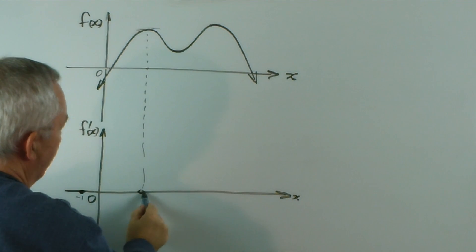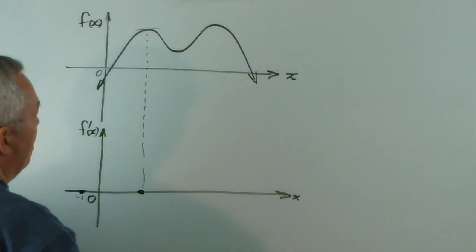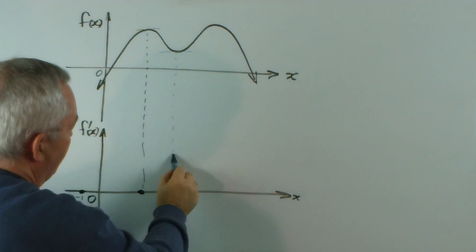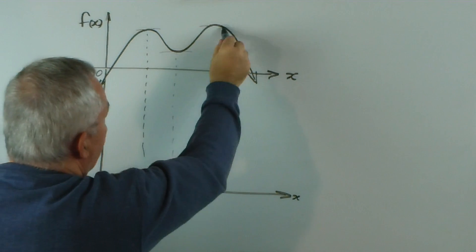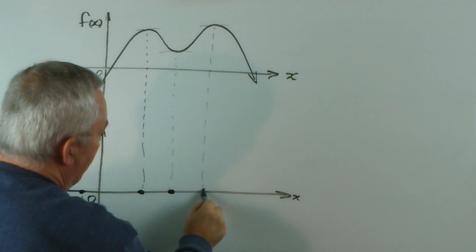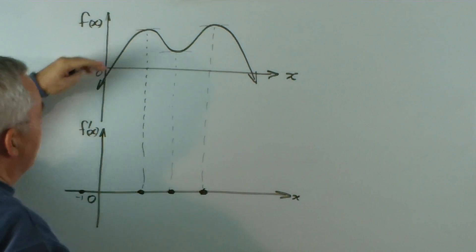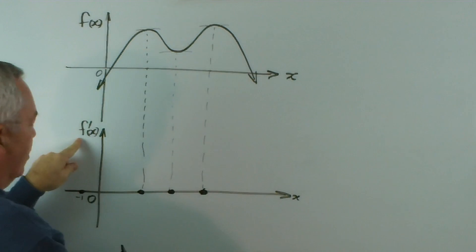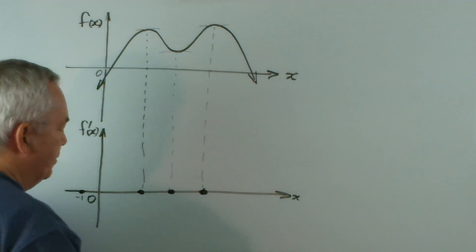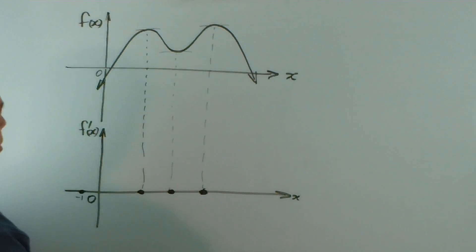So we know the graph goes through here. We know it goes through here. And we know it goes through here. Because the gradient here is zero, zero and zero. And since this is a gradient function, we need zeros. How do we get the shape in between?